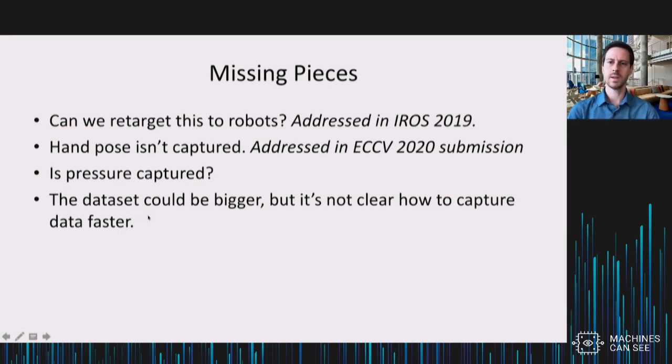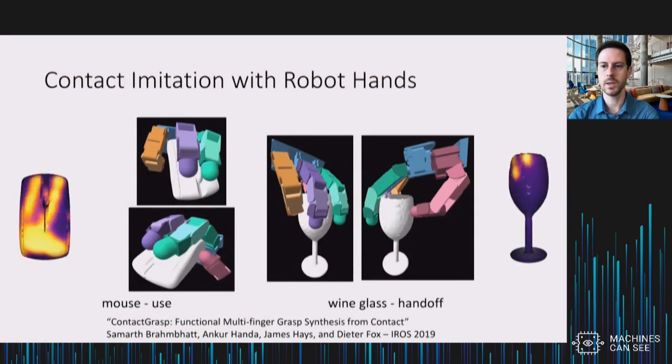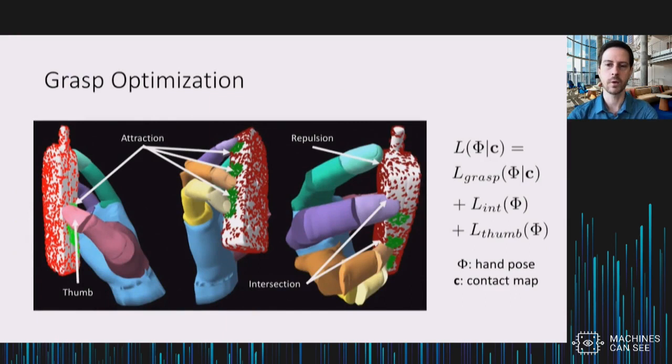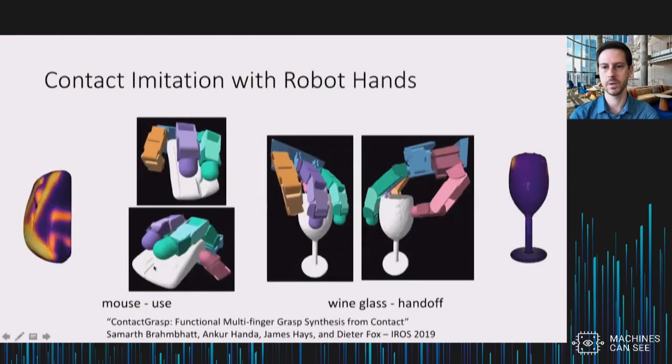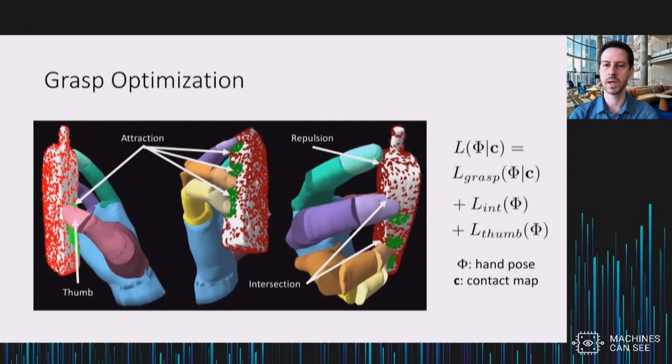And another limitation, which I'll just be honest about, is that the dataset is pretty big. It took a lot of work to build, but it would be great if it were bigger, but it's not clear how to capture this data faster. There's a limitation. You need a human actually grasp it, and you need to actually scan it, so it's not easy to crowdsource or parallelize, it seems like. It would be great to have hundreds of thousands of these grasps, not just thousands. But let's look at some follow-up work. So in this IROS work, this was a collaboration with Dieter Fox's group at NVIDIA. We showed that you could put these contact maps into an optimization for a robot grasp so that the robot tries to touch the object in the same place that the human did, even if the human and the robot grasper are pretty different. We show that it's possible and that it does lead to human-like grasps of a robot in some cases.